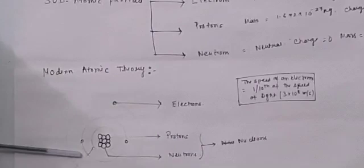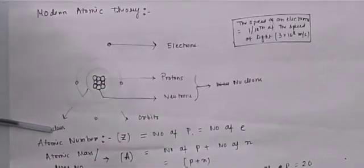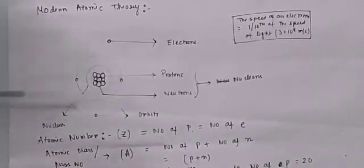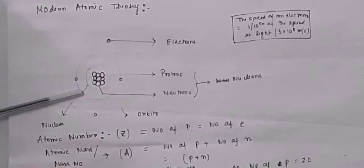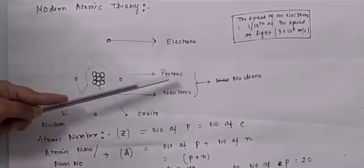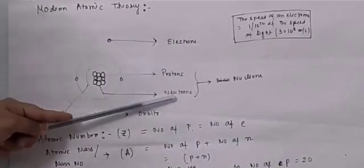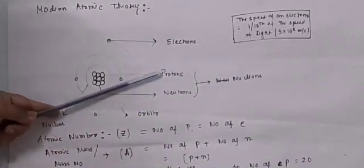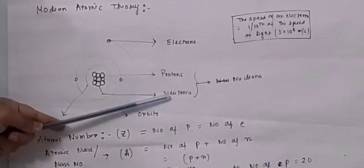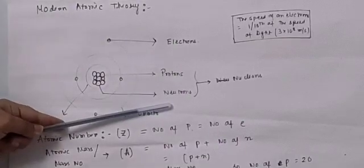Next we will go for the modern atomic theory. Students, you can see this picture. This central part is known as the nucleus, and it is similar to the solar system. As we know, in the solar system, the sun is the central part and all the planets are revolving around the sun. Just like here, the nucleus is the central part, and this nucleus contains positively charged particles — protons — and neutral neutrons. Together, these protons and neutrons are known as nucleons.